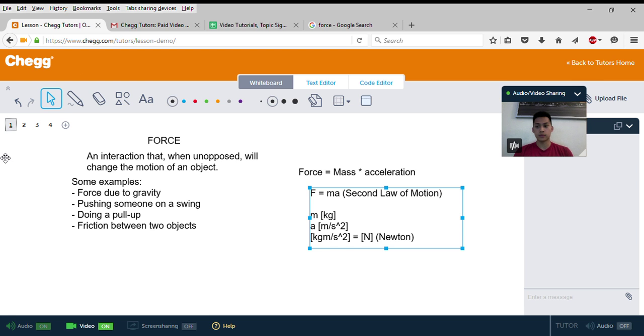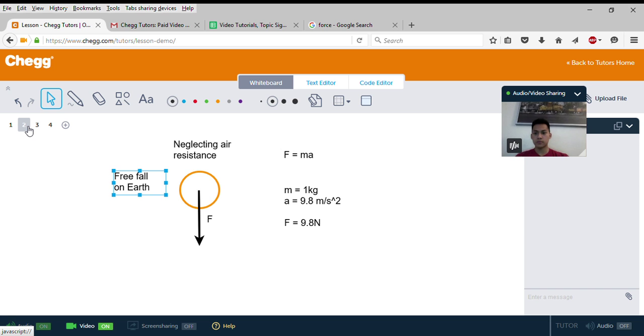Let's do a quick example. We have a regular ball in free fall on earth. If we neglect air resistance, the only force acting on this ball would be the force due to gravity going downwards, as seen by this arrow.